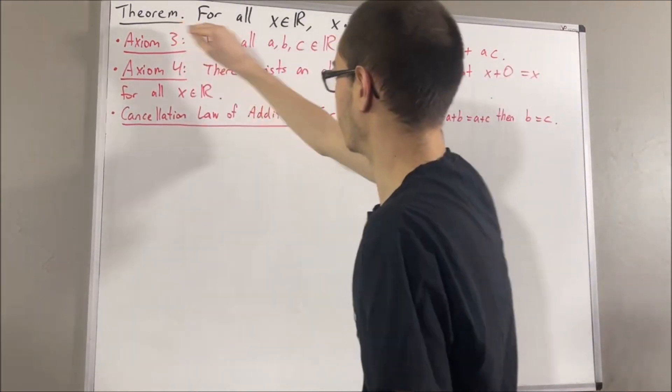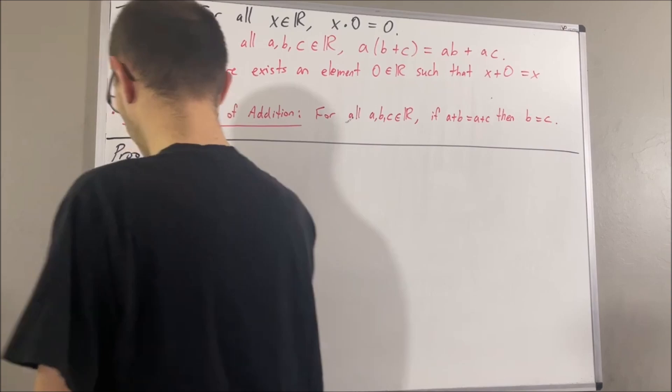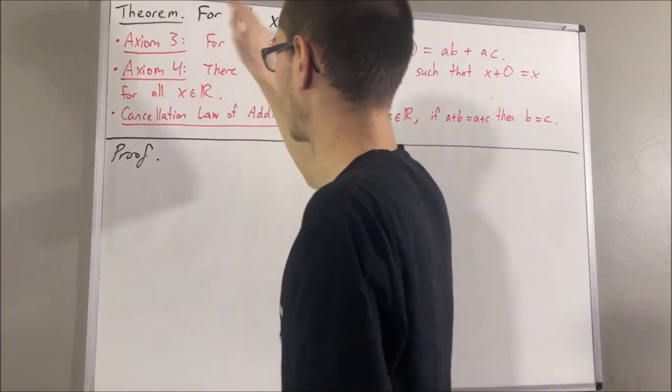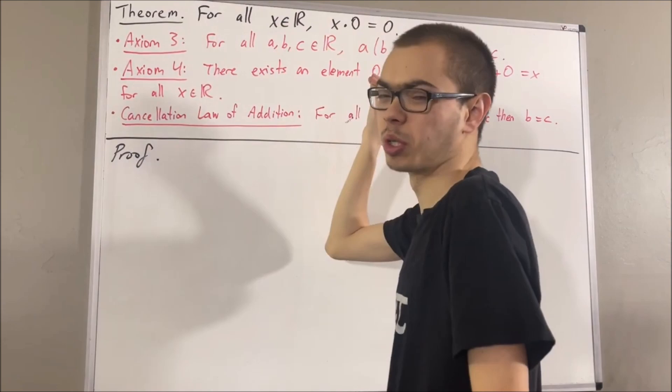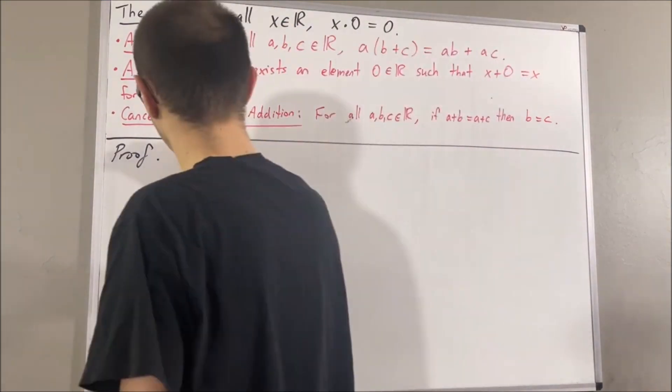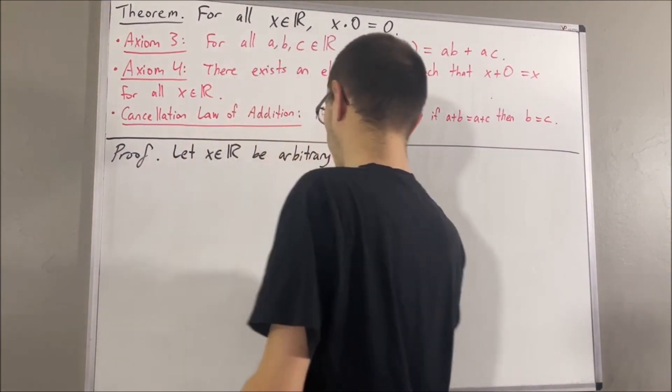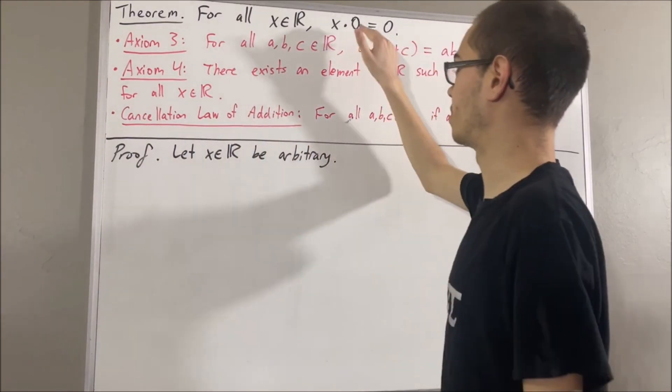Okay, so now let's get into proving this theorem. To start off the proof, since we're trying to prove a statement about every real number, let's give ourselves an arbitrary real number. I'll call it x. From here, we want to show that x times 0 is equal to 0.